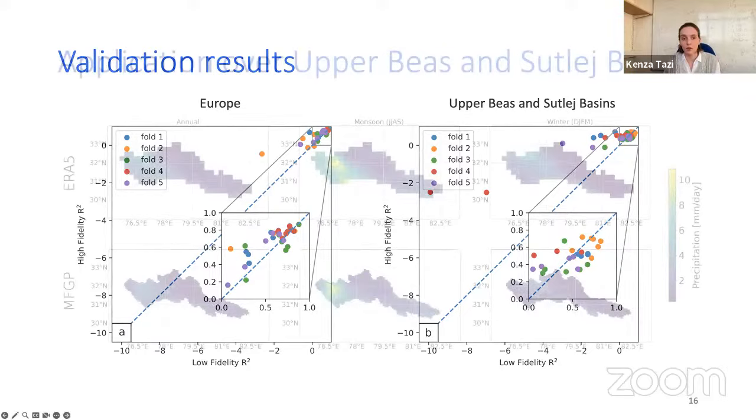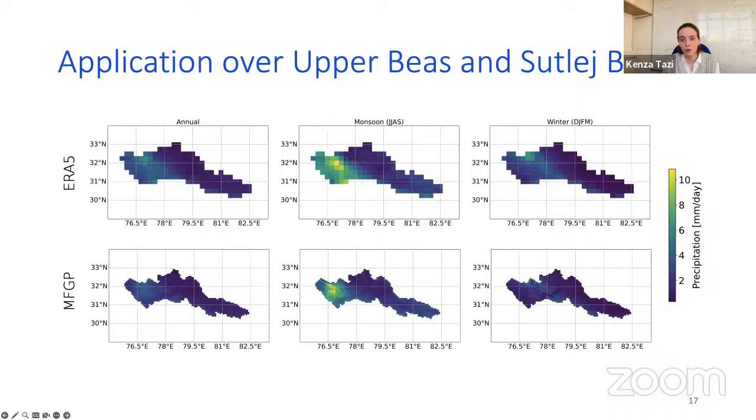So now that we know that the model works, we can go and apply it to the whole basin. Here are some results showing the annual and seasonal averages between 2000 and 2010. The top row here represents the ERA5 dataset, the low-fidelity one, and the bottom row represents the output of the multifidelity Gaussian processes. The darker colors represent lower precipitation values, and the lighter colors represent the higher ones. For the multifidelity GP output, we're predicting at a one kilometer resolution. This is pretty arbitrary, you can choose any resolution you want, but this resolution was specifically chosen because it allows for municipal level decision making. This could allow towns and cities to make informed choices on where to place dams, for example, or flood defenses.